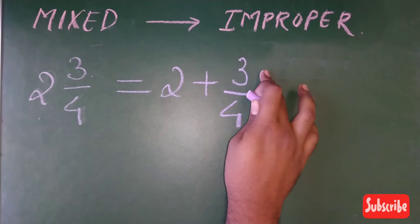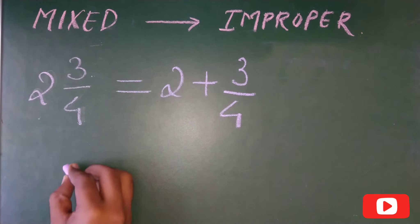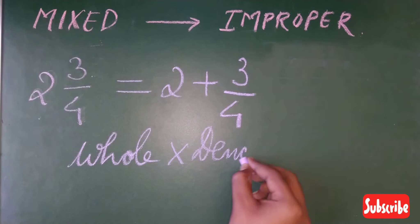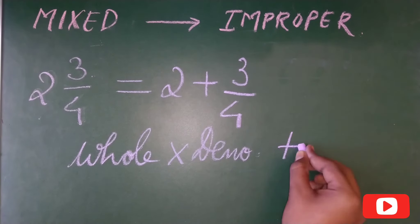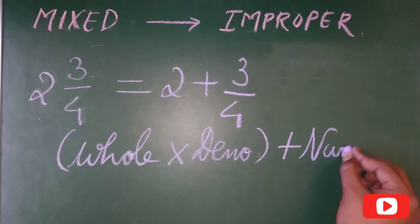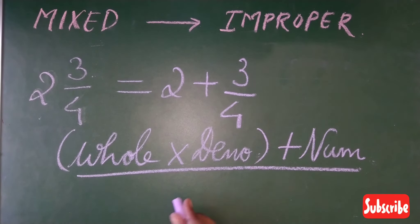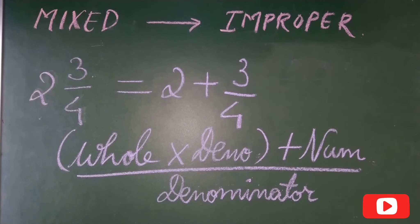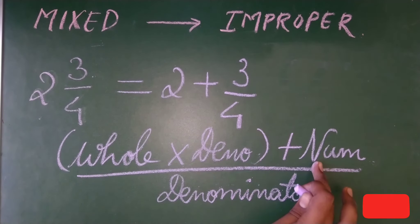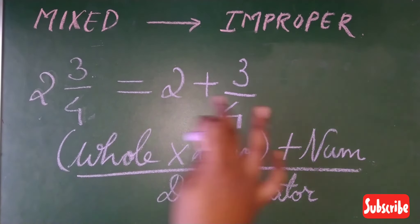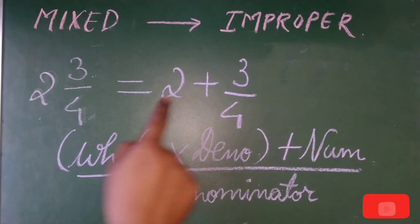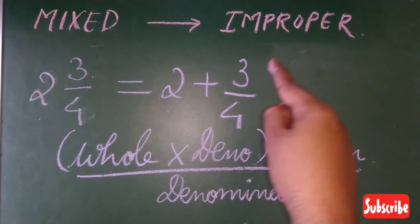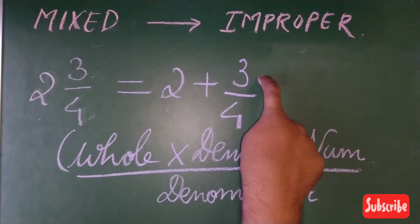The formula is: whole number into denominator, plus numerator, divided by denominator. So the result is: (whole number × denominator + numerator) / denominator. That is the formula to convert a mixed fraction to an improper fraction.